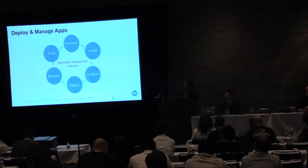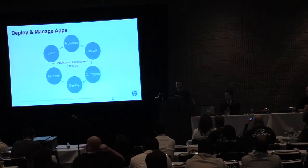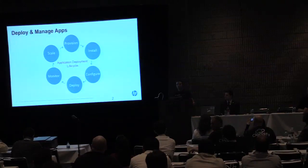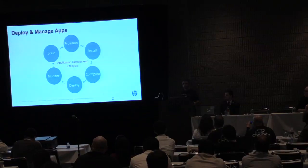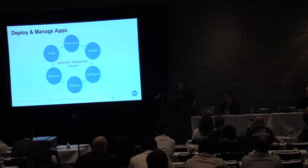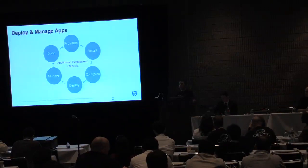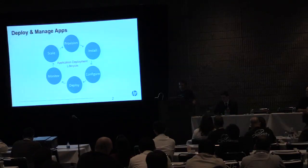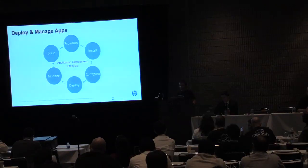We start by provisioning the infrastructure. Most people think about compute, but we've seen networking discussed here as well. We're talking about multiple types of resources needed for an application: compute, networks, subnets, security groups, key pairs, block storage — whatever is needed. That's just the provisioning phase. Then we have to install and configure those resources — specifically for VMs, that means running Chef, Puppet, or custom scripts on top of them and installing the components needed to run your application.